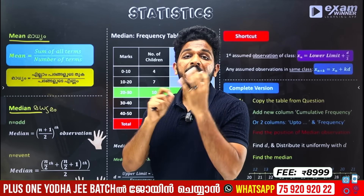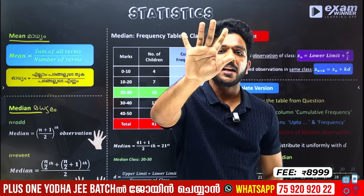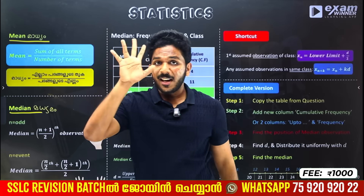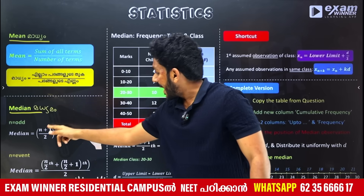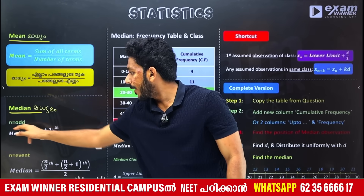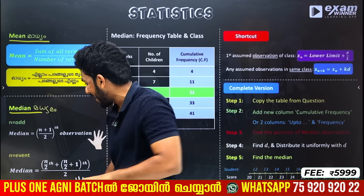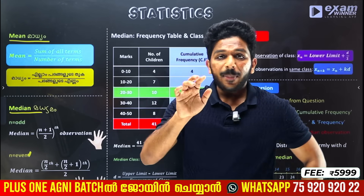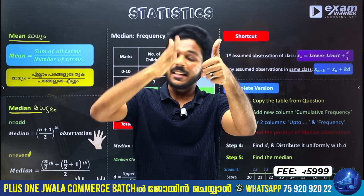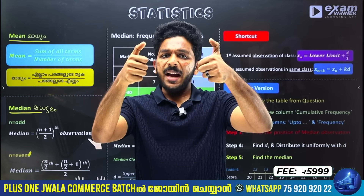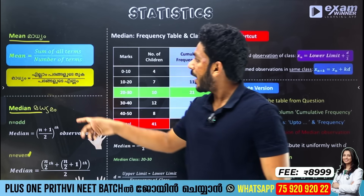For the median, we arrange the data in increasing order or decreasing order. If you have 5 values, the middle one is the 3rd. After the 5th value, n plus 1 divided by 2 gives you the position. For an even number of values, for example 5 and 6, you take the average of those two middle values.